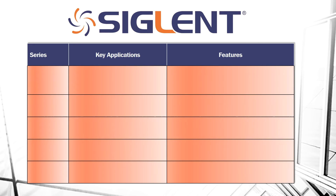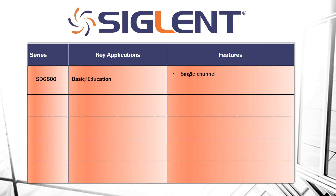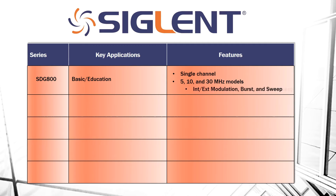Now let's take a closer look at each series. The SDG 800 series is ideal for basic function generator requirements and education. It's got a single channel output, with 5, 10, and 30 MHz models. And it has the internal and external modulation, burst, and sweep capabilities.